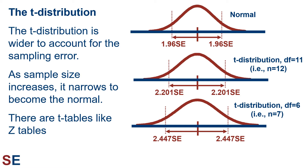The middle figure shows a larger sample size — 11 degrees of freedom, which is a sample size of 12. We can see that now the middle 95% of that t distribution is 2.201 standard errors above and below the mean. As the sample size increases, the t distribution narrows to eventually become the normal distribution for an infinite sample size.